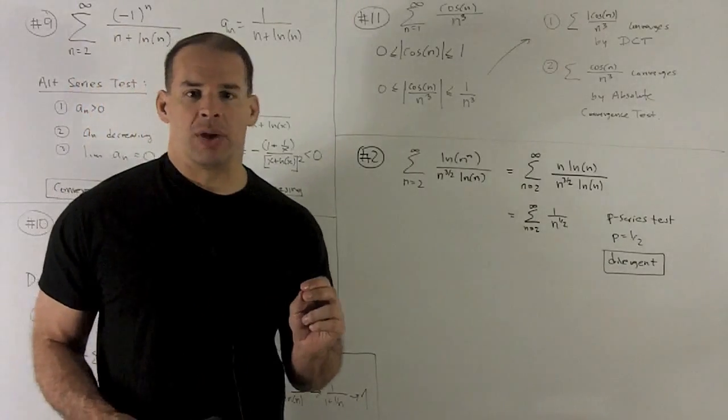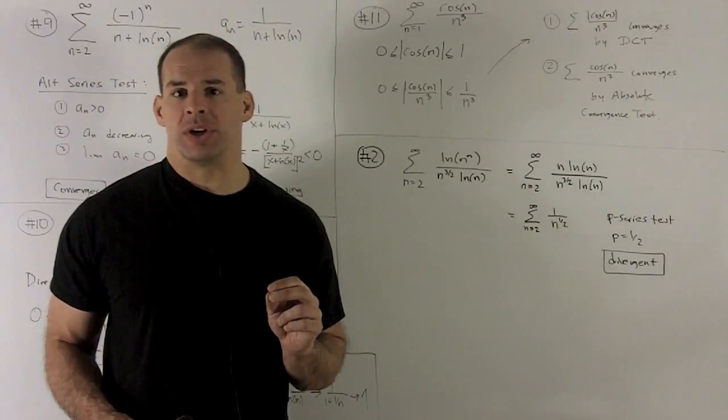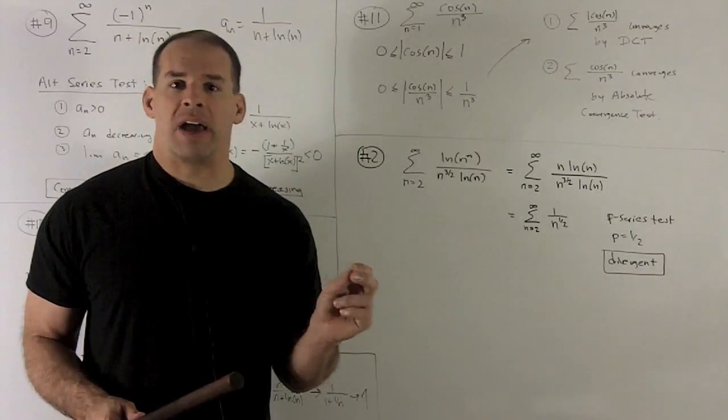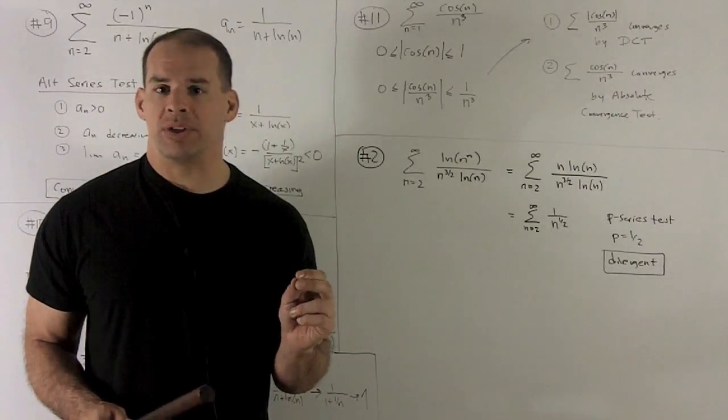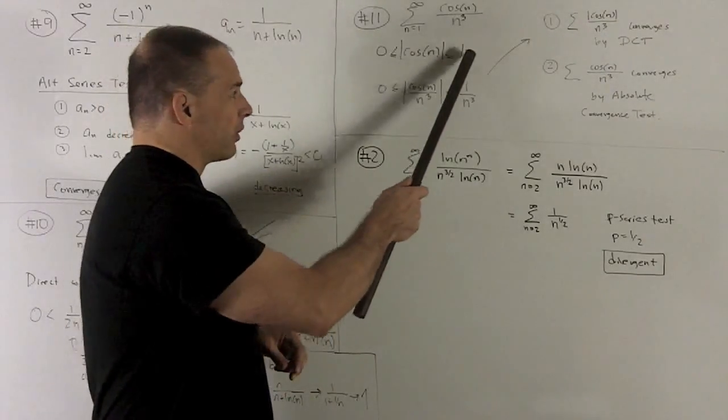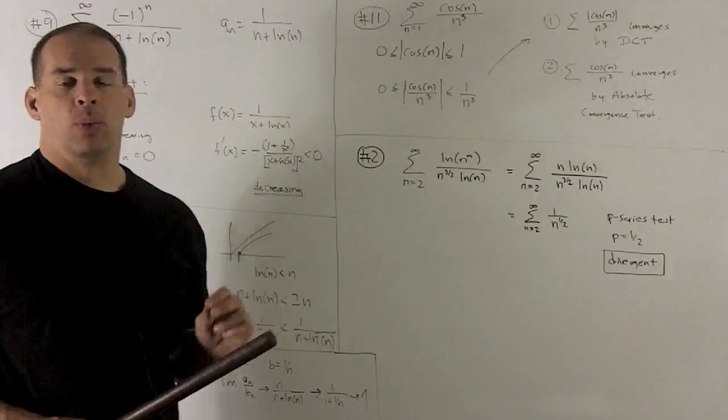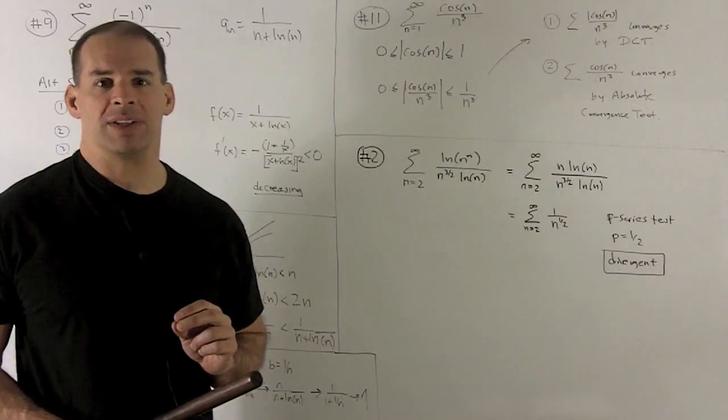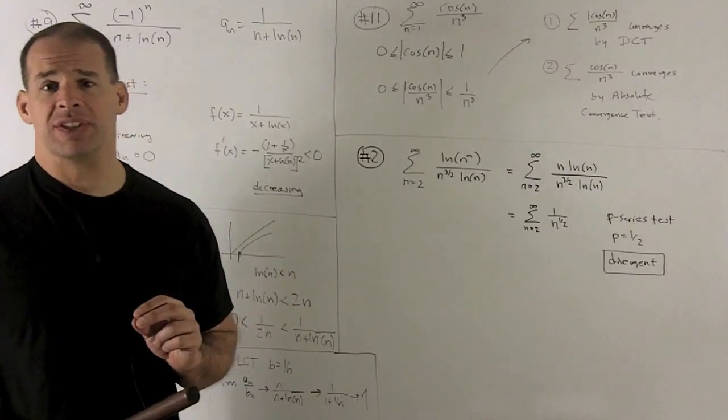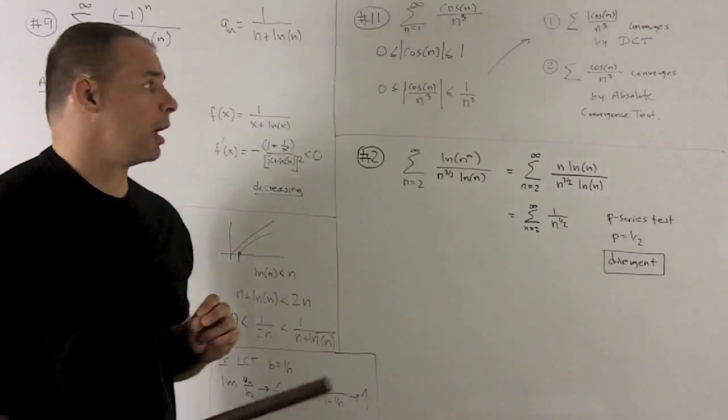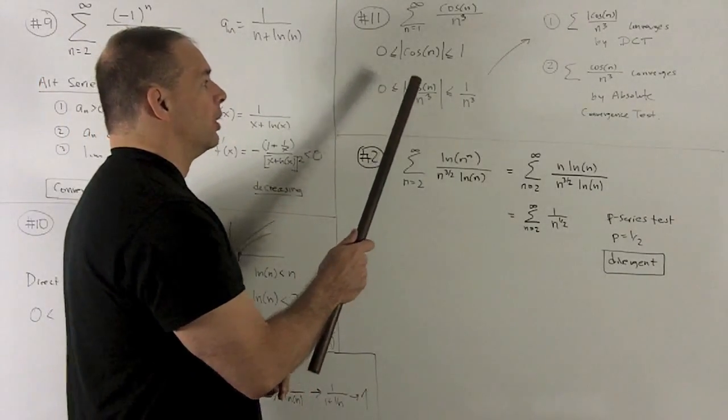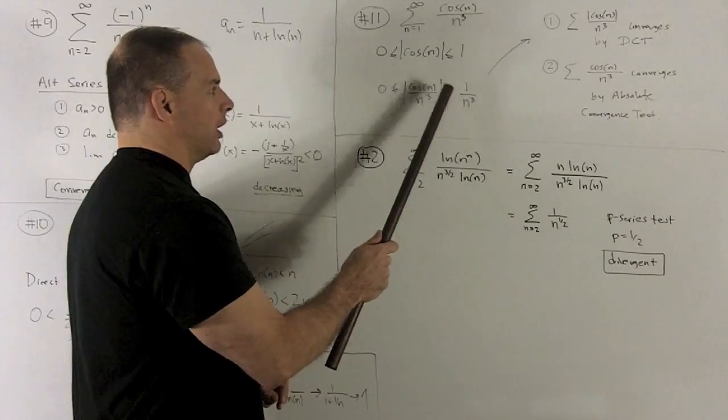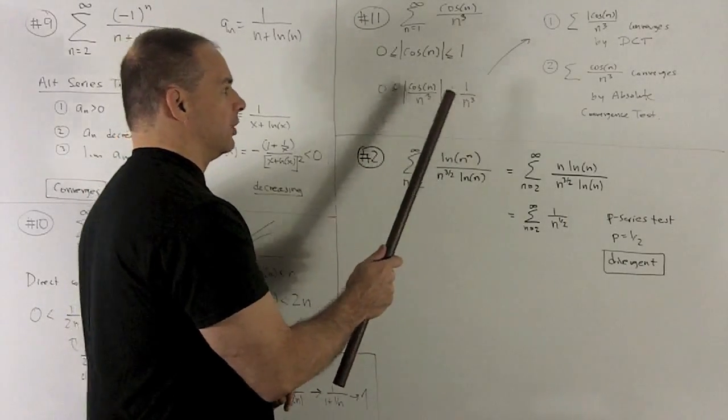Well, since the absolute value of anything is going to be bigger than or equal to 0, I have this on this end. On the other end, the absolute value of cosine is always bounded by 1 because it's always between minus 1 and 1. So, I have this on the other end. We can divide everything by n cubed. Here, n's a positive number. So, cubing it keeps it positive. So, that means I can push it to the inside of the absolute value if I want. So, that's going to give me 0 less than or equal to cosine n over n cubed, absolute value, is strictly less than or equal to 1 over n cubed.